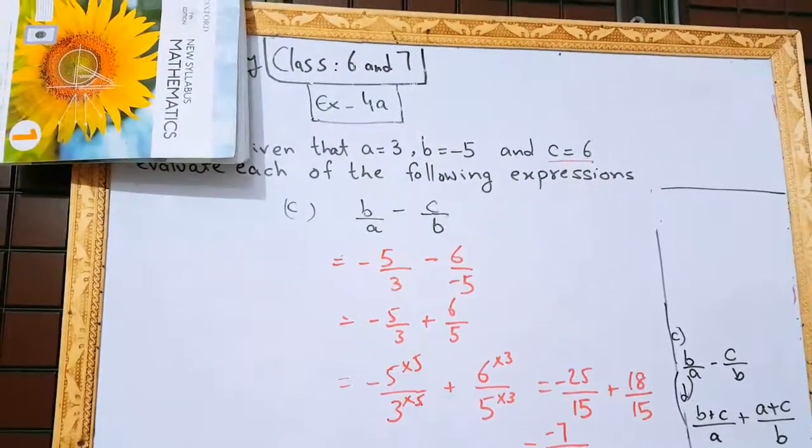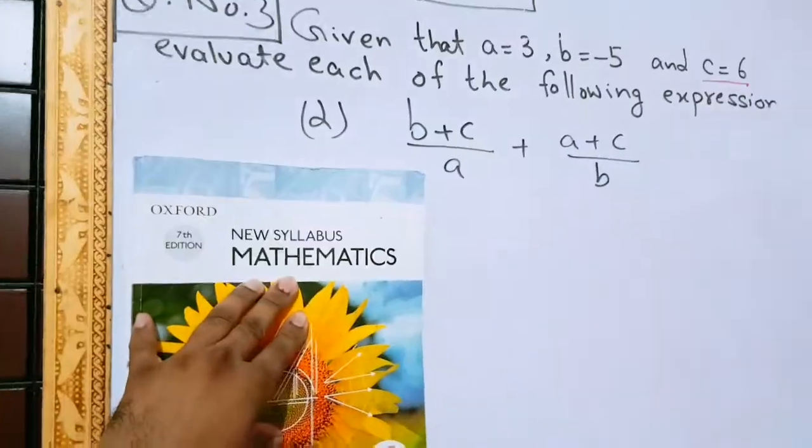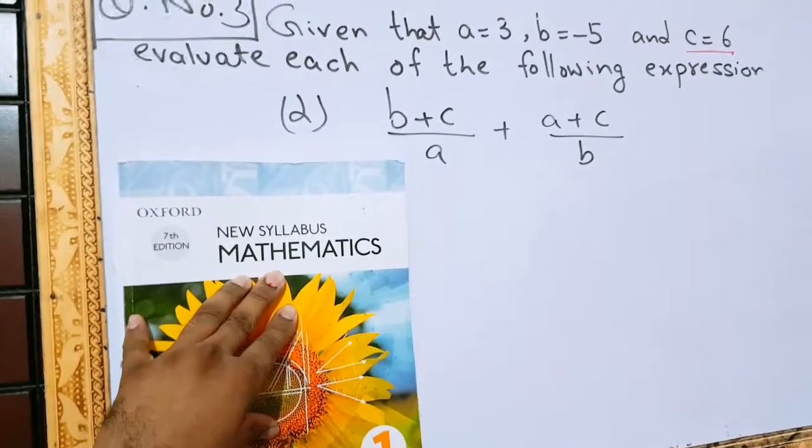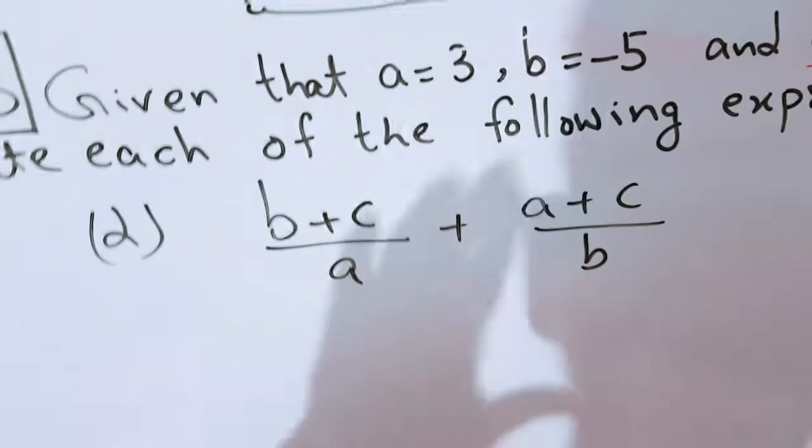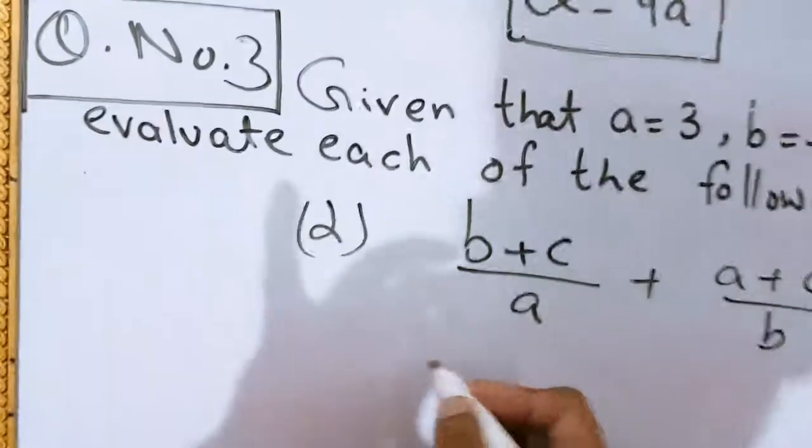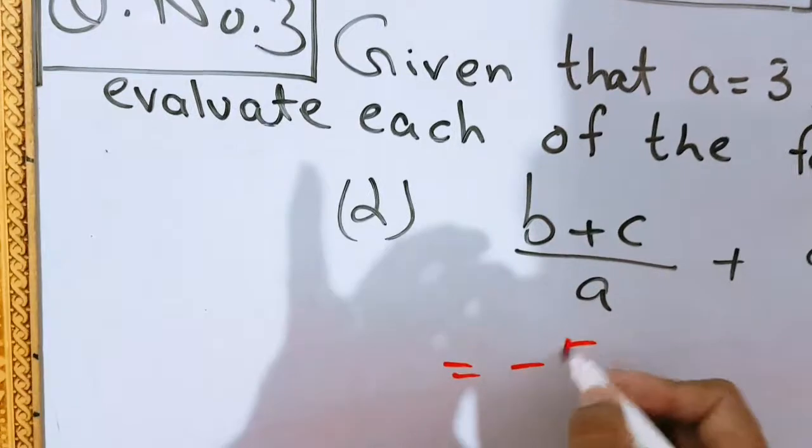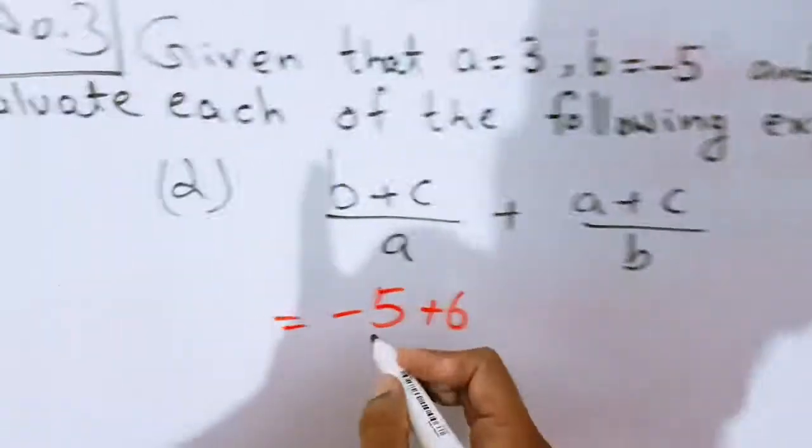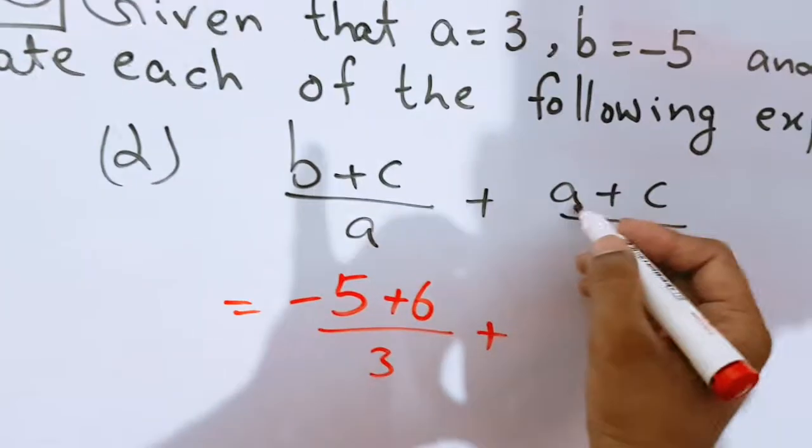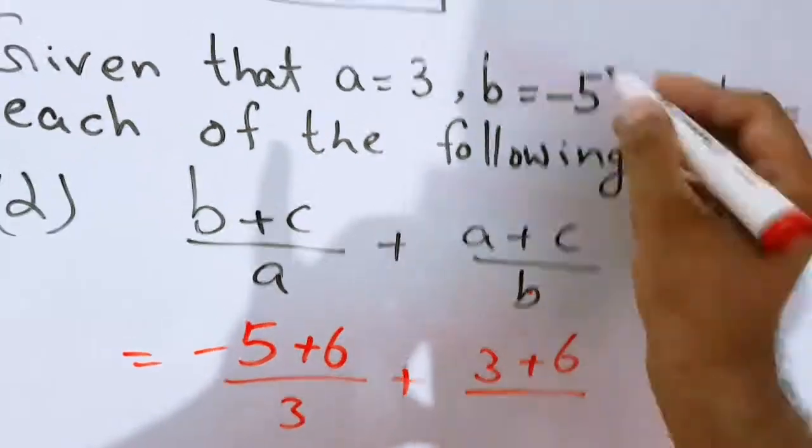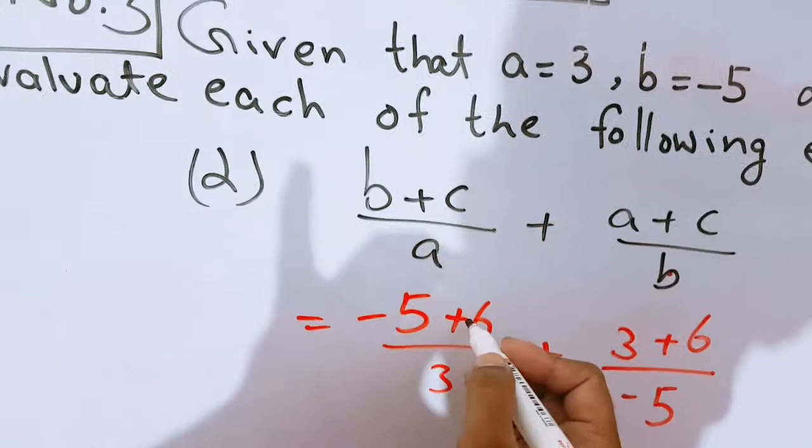So, let's move to part d now. Part d has been written from exercise 4a. Now, you will see how we shall solve it. b plus c over a and a plus c over b. In place of b, I shall write minus 5. And in place of c, I shall write 6 as it is given in the question. And in place of a, I shall write 3. In place of a, I shall write 3. In place of c, I shall write 6. In place of b, I shall write minus 5.